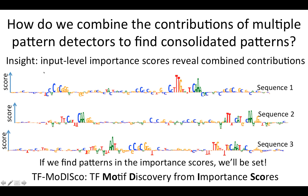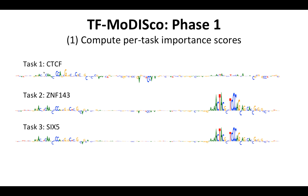To do this, we developed TF-MoDISco, where MoDISco stands for Motif Discovery from Importance Scores. The first phase of TF-MoDISco involves computing importance scores for every sequence for all the tasks. Going back to our case study, here is the sequence, and here are its scores for CTCF, ZNF143, and SIG-FI.